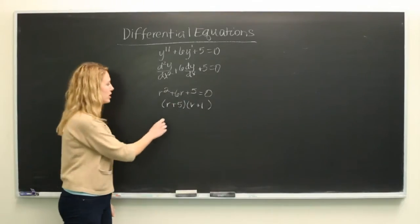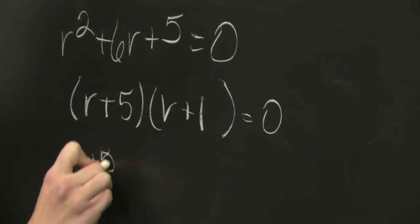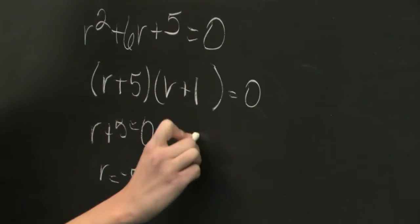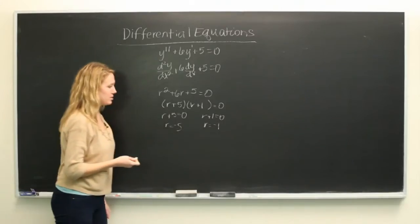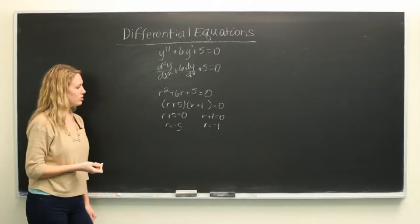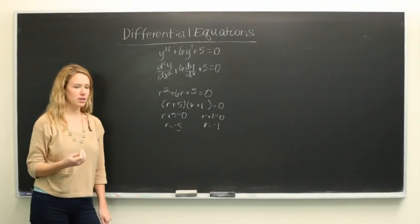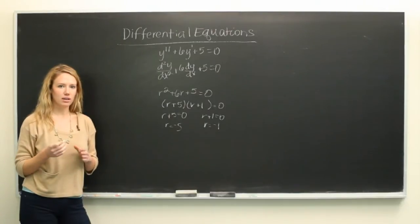So our roots are equal to minus 5 and minus 1. So since these values are real numbers that are not the same, this is called case 1.